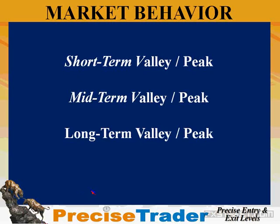Market trend directions are denoted by a short-term valley or short-term peak, a mid-term valley or mid-term peak, or even a long-term valley or long-term peak. This is what makes market signals happen, and this is what you use to see whether the market has reversed up or reversed down. When you can identify valleys and peaks with ease, you are less likely to be on the wrong side of the market.